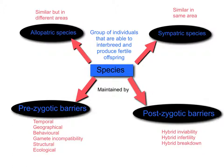The second pre-zygotic barrier is a geographical barrier — something like a mountain range that has arisen, a lake, a river, or a very dense forest that keeps individuals from two species from being able to breed with each other. The third is behavioural isolation, where courting rituals or other behaviours mean that individuals of either species do not recognise each other as an appropriate mate, preventing mating from occurring.